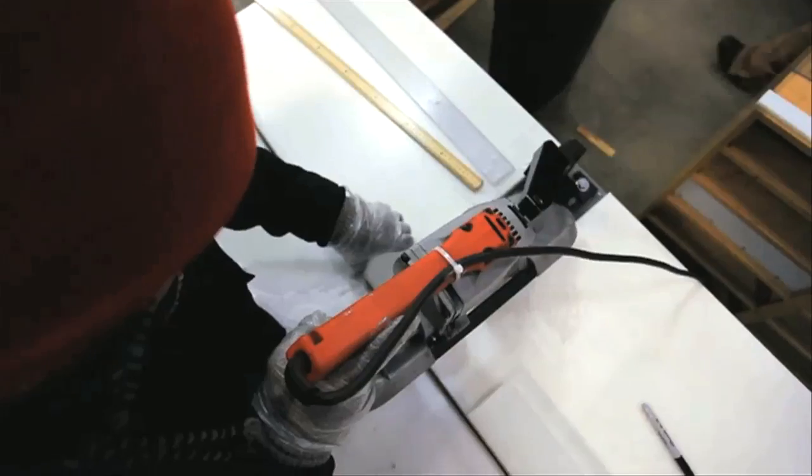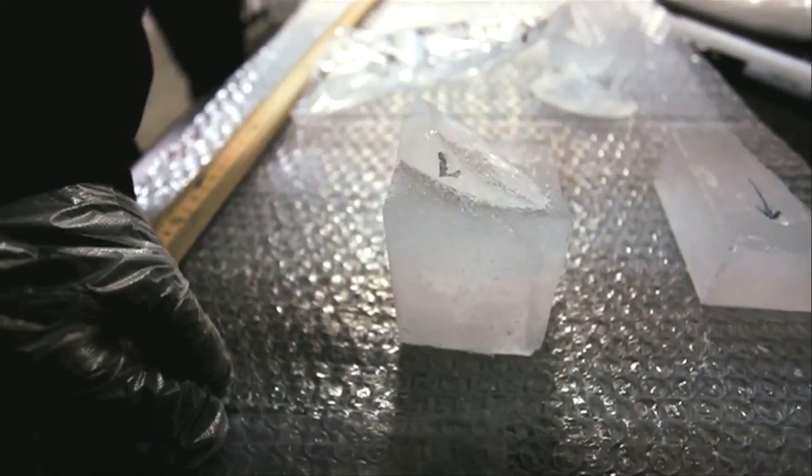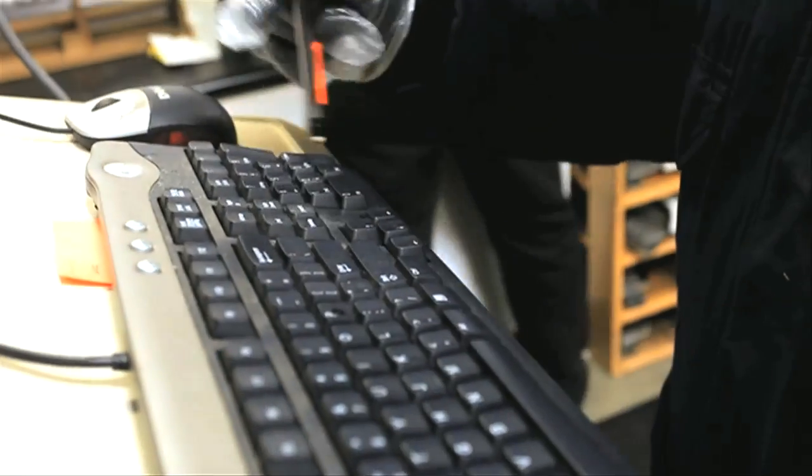Scientists now are working with cores from Antarctica that go back even further. They tell us, with a very high degree of accuracy, how much carbon dioxide was in the air that far back.